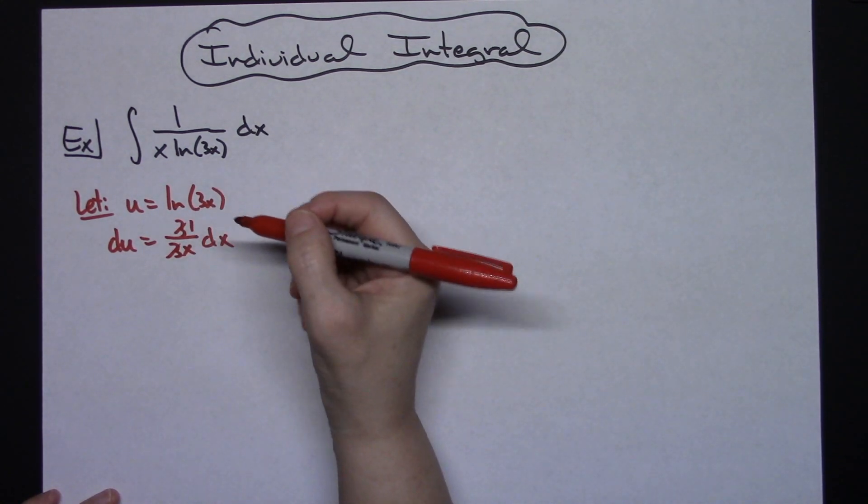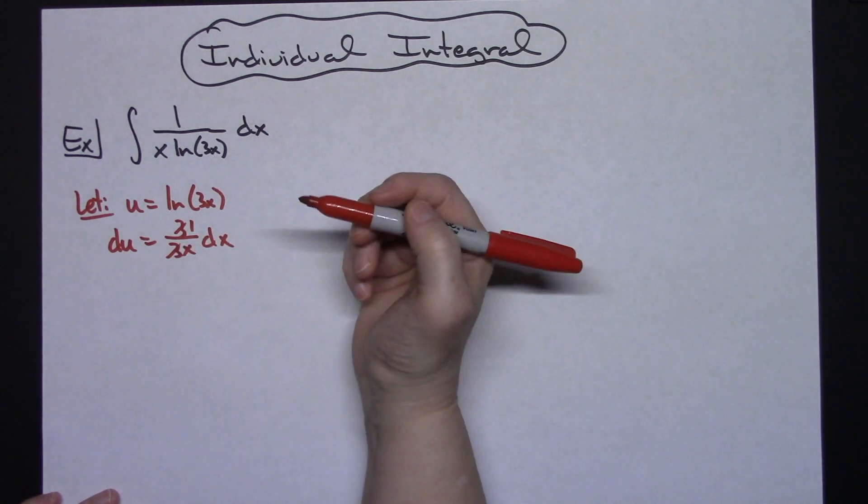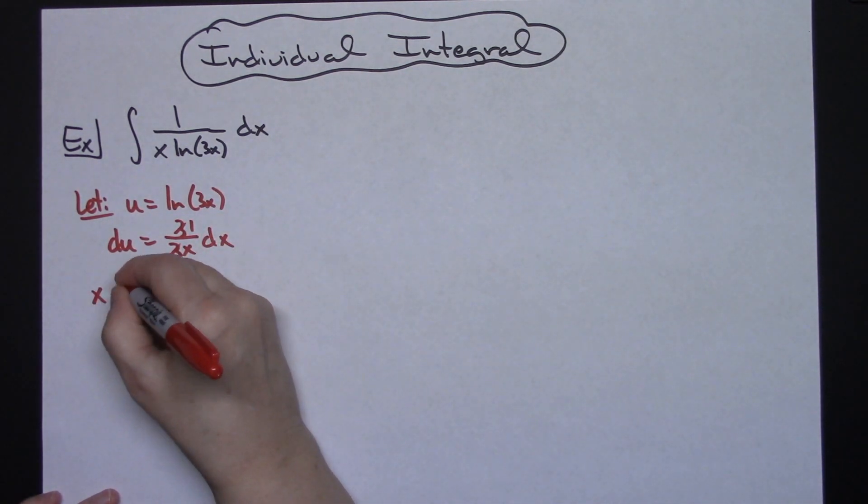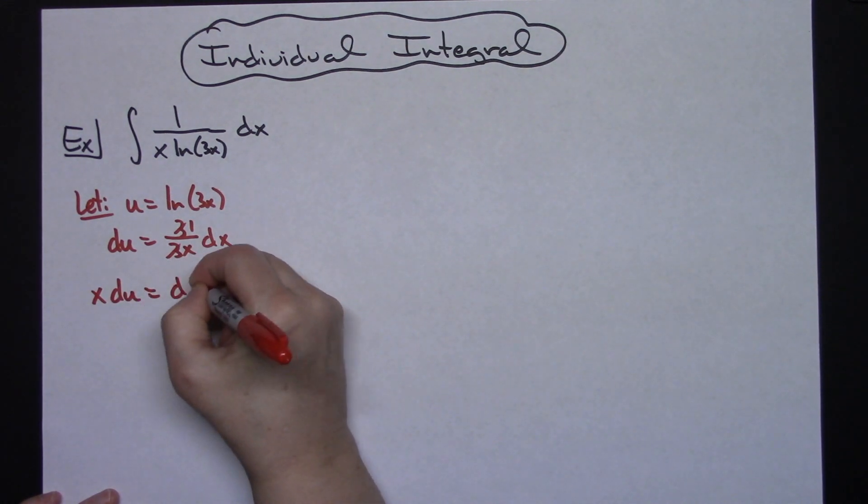I want to go ahead and solve for that dx. I'm going to multiply both sides by x, so I'm going to have x du is equal to that dx.